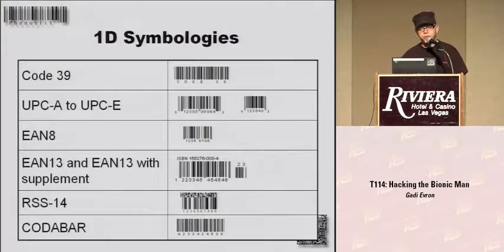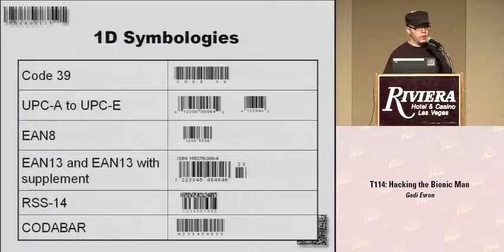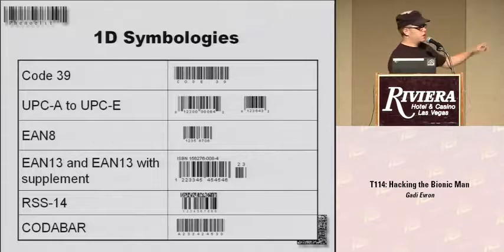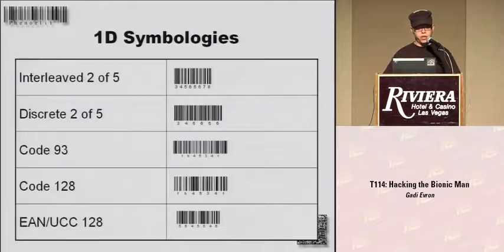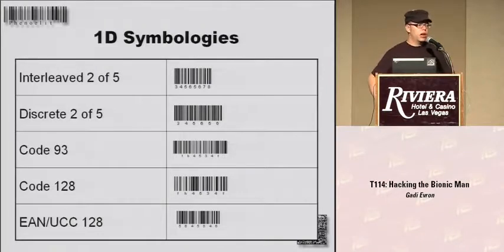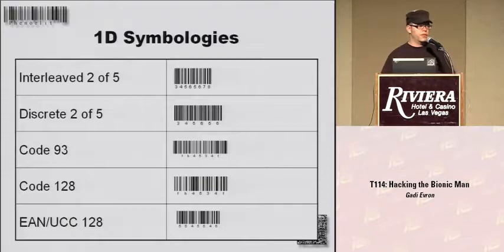In barcode speech, the things we just call barcodes are called symbologies. We have one-dimensional symbologies and two-dimensional symbologies. The smarter ones of you will actually start to notice that some of the samples contain only numbers, and some actually contain letters — so we can have letters in barcodes. There are a bunch of different symbology standards out there, and they differ mostly in error correction, and also in what resolution you can print them in, and all kinds of other stuff. It's really like protocols — everyone invents their own.